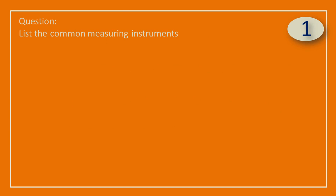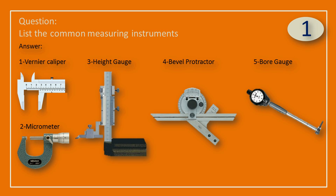Question: List the common measuring instruments. Answer: These are the common measuring instruments — Vernier Caliper, Micrometer, Height Gauge, Bevel Protractor, and Bore Gauge.